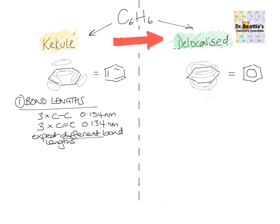So in Kekulé you're expecting different bond lengths depending on whether it's a C-C single bond or a C=C double bond. However, when they actually looked at the bond lengths in benzene, what they actually found is the bond lengths were 0.140 nm — and importantly, this value of 0.140 nm was for every C-C bond in benzene. You'll notice that 0.140 nm is somewhere in between a C-C single bond and a C=C double bond.